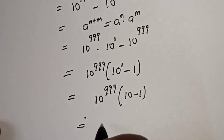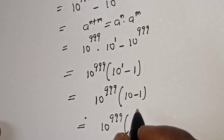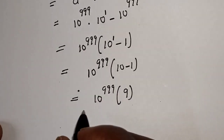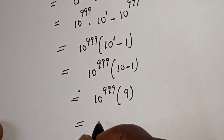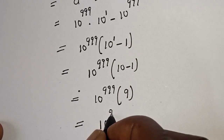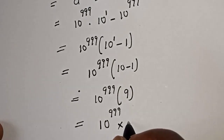This is equal to 10 raised to power 999, bracket, 10 minus 1, that is 9. This is equal to 10 raised to power 999 multiplied by 9, and 9 can be written as 3 squared.